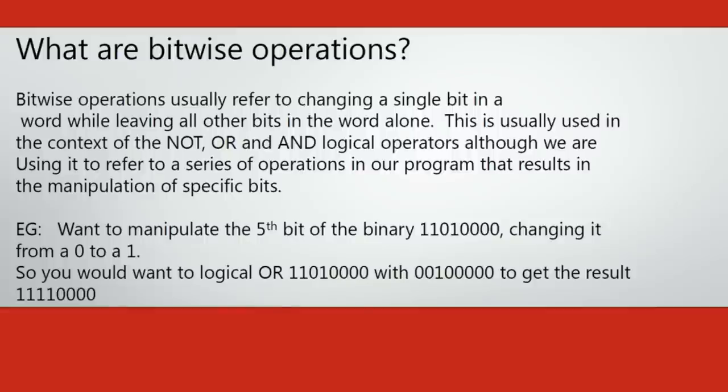For example, if we wanted to change one of the zeros to a one in a set of binary, we would only have to take the original binary word and logical OR it with a set of zeros and a one in the position of the bit you wish to manipulate from a zero to a one.